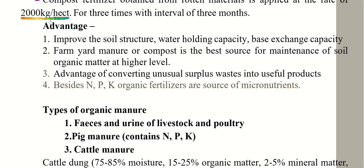The advantages of applying organic manure include improving the soil structure. With the application of organic manure, the soil structure can be improved, the water holding capacity of the soil is increased, and the base exchange capacity is also improved.